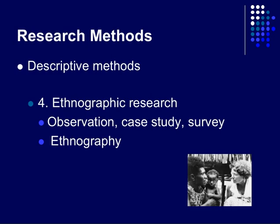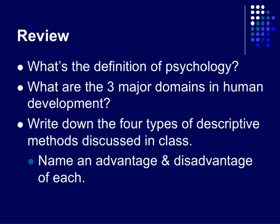So that gives you a good start thinking about these descriptive methods. The next category is correlational, and the third category is experimental. Here are some review questions you may find helpful — see if you can answer these now. I'll see you in the next section.